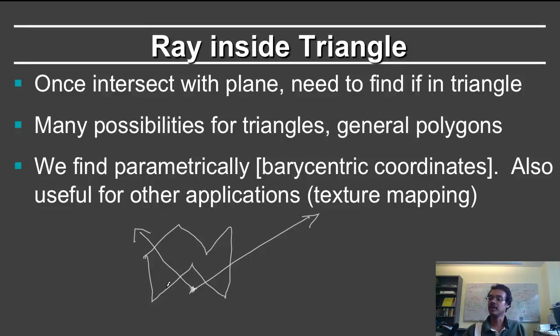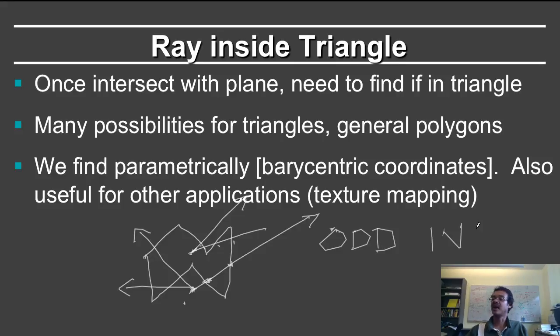Remember, if it intersects an even number of times, the point is outside the polygon. If it intersects an odd number of times, notice that in this case it has three intersections, in this case it has one, then it is inside. So odd is in, and even is out.